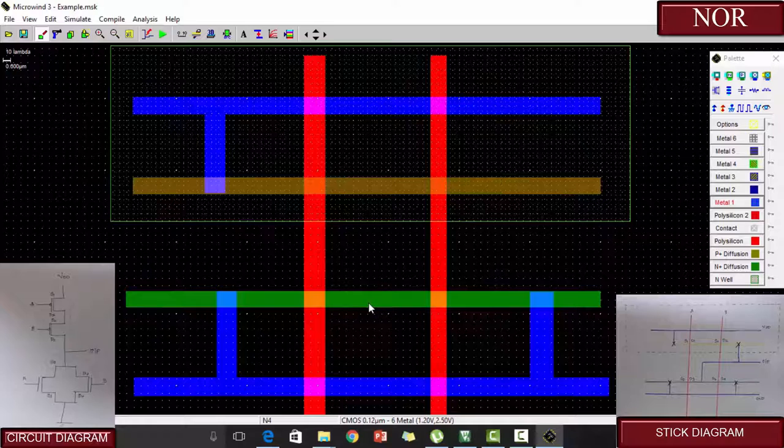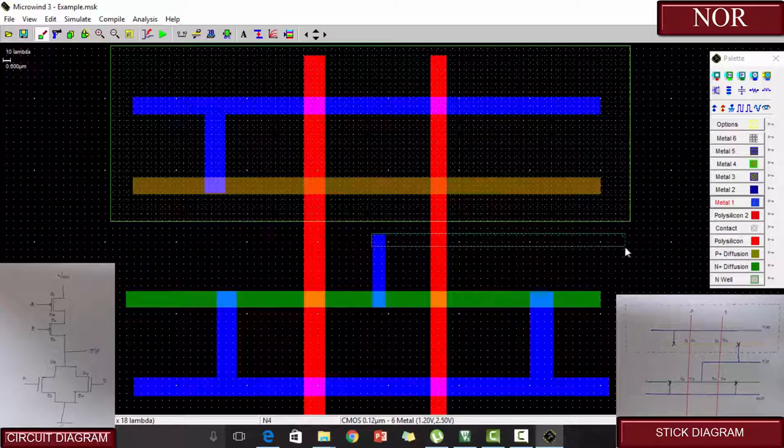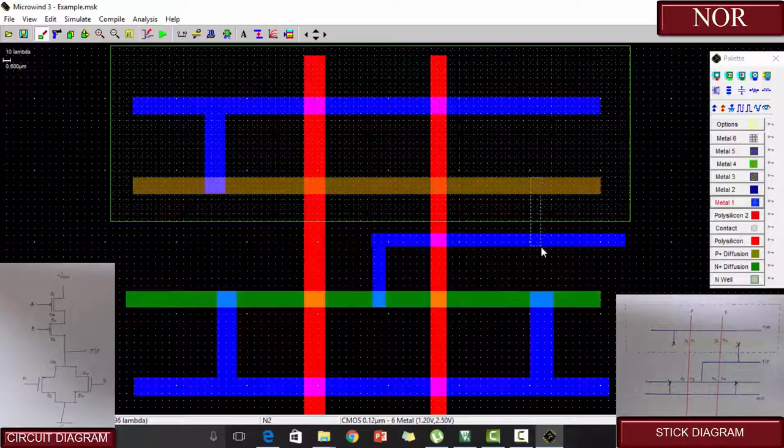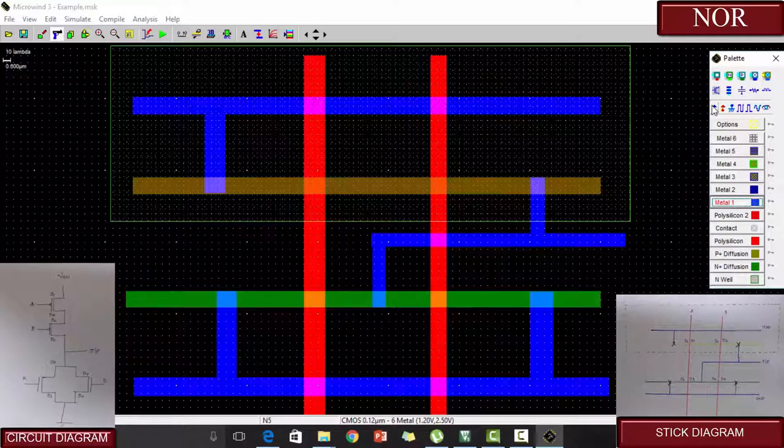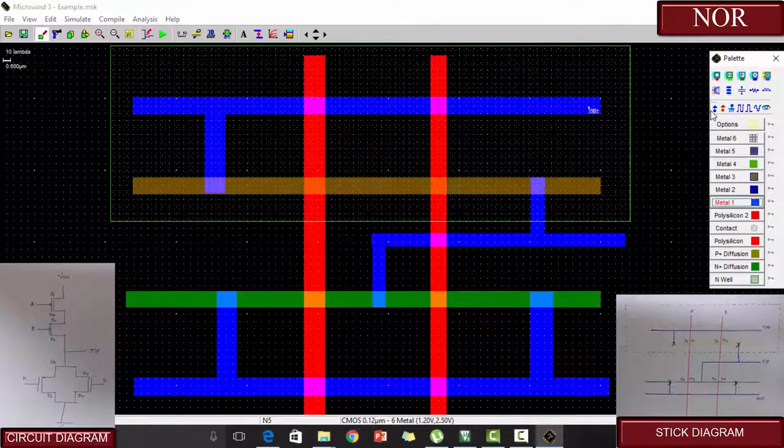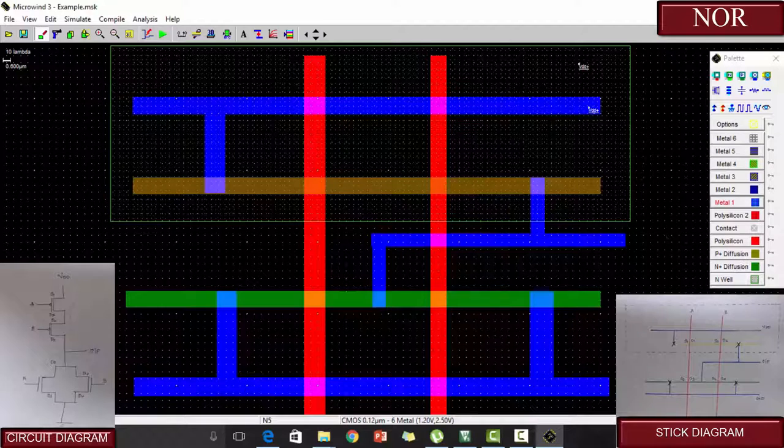Referring the stick diagram, we are going to connect P-diffusion and N-diffusion to get the output. Referring the stick diagram, we need to give V-diffusion to this metal and V-diffusion to the N-well.